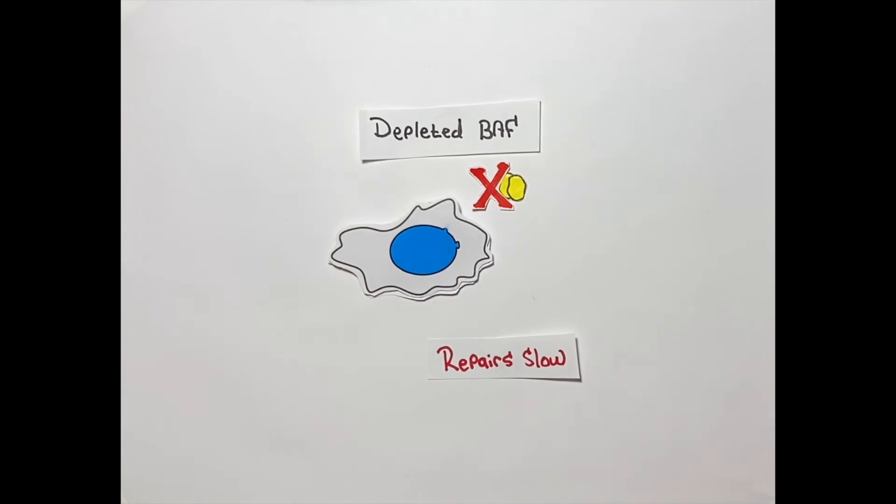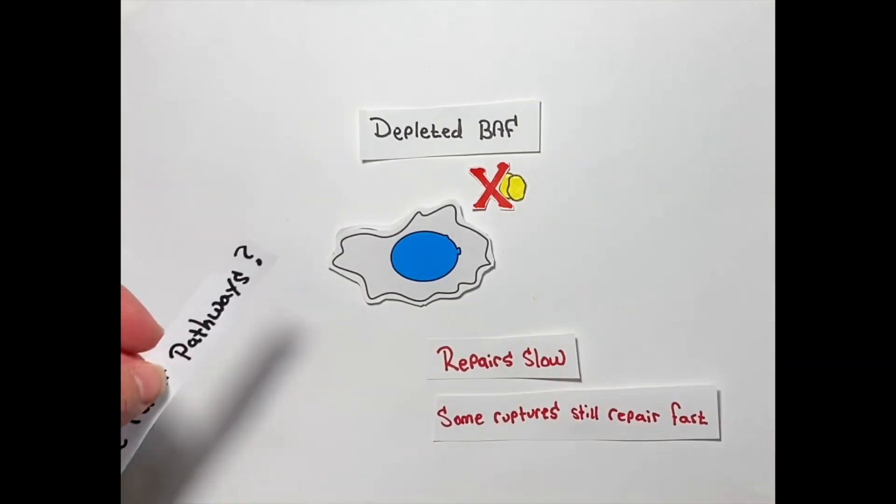Interestingly, not all ruptures were equally affected by BAF loss, suggesting there could be multiple ways the nuclear membrane is repaired.